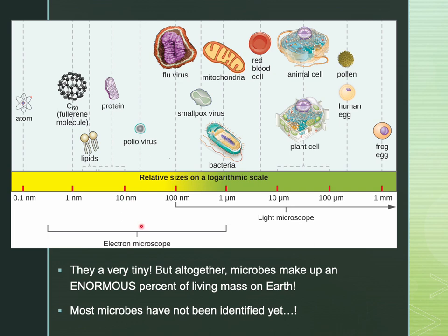Microbes actually take up a huge portion of Earth's biomass. It's also important to note that most microbes actually haven't even been identified yet — over 99.99% of microbes on Earth have not even been cultured or identified. It's estimated that there are over five nonillion — that's a five with 30 zeros — bacterial cells on the planet. Isn't that amazing? Microbiology really is an incredible field, and we've only just begun to understand the critical and integral role that microbes play in our ecosystems.